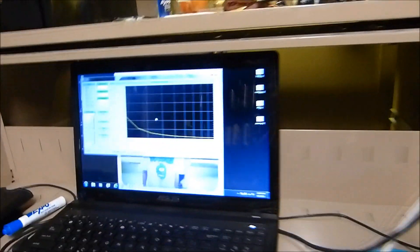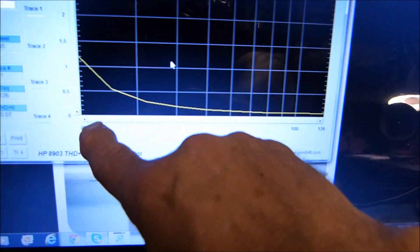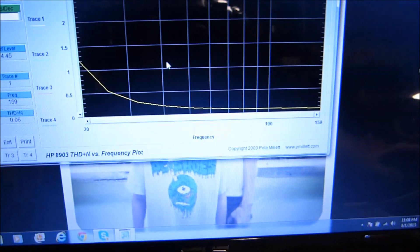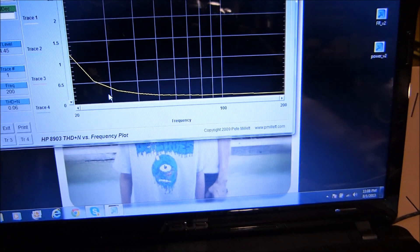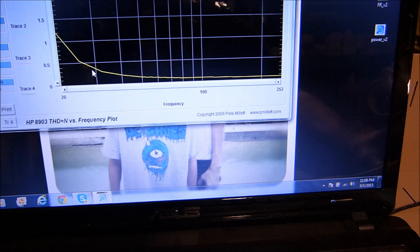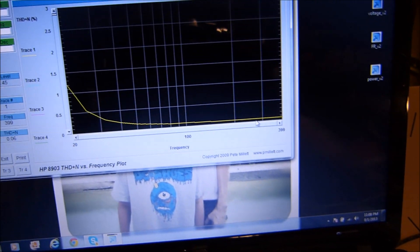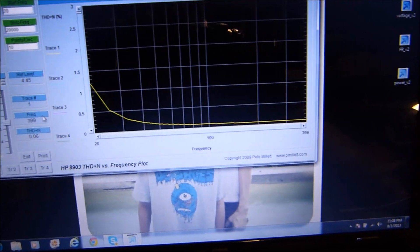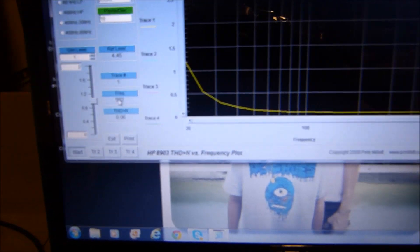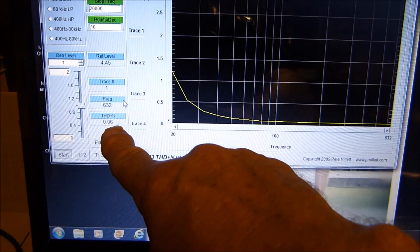And what we see over here is THD looks like it started out at about 1.2 at 20 hertz. 30 hertz, it dropped to about 0.3. Looking pretty flat down there. Right here, frequency is 502 hertz, THD is 0.06 at that point.